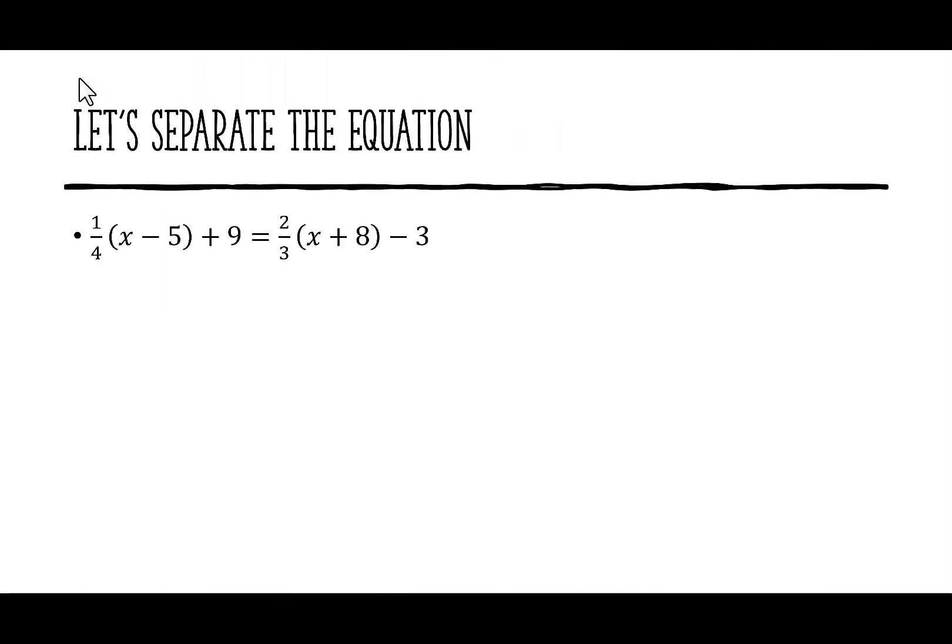Let's separate the equation. We'll take the left-hand side and make it into a line: y = (1/4)(x - 5) + 9. Then we'll take the right-hand side and make it y = (2/3)(x + 8) - 3.